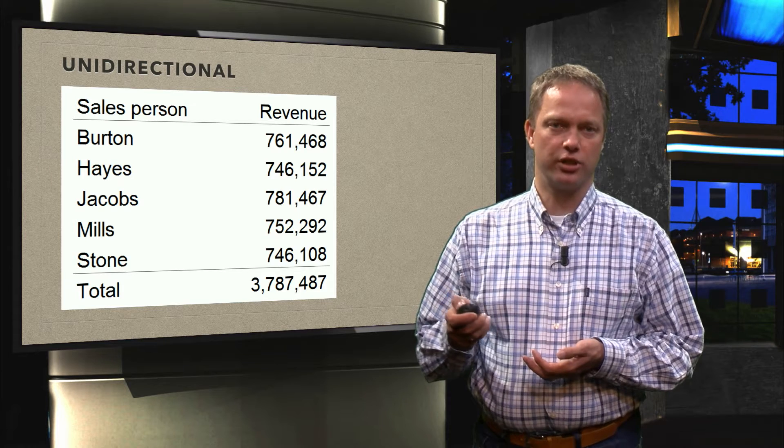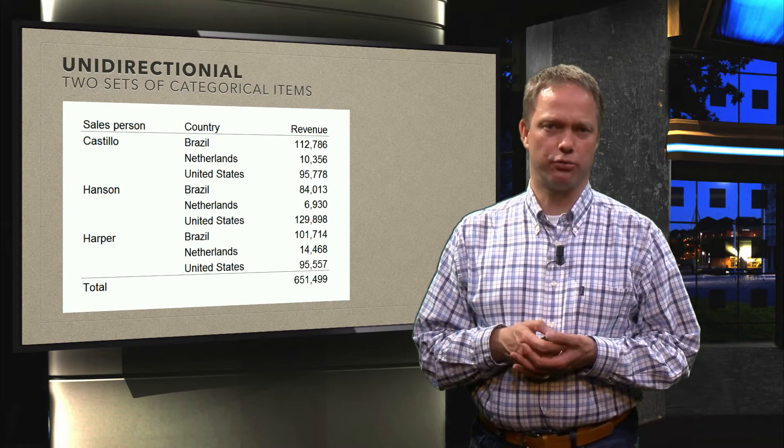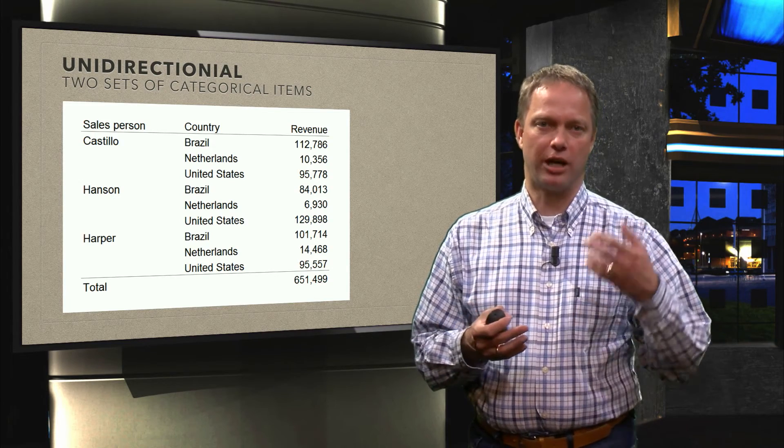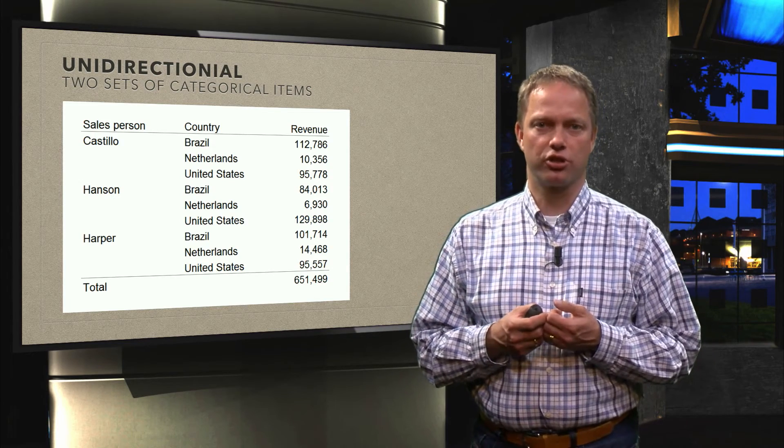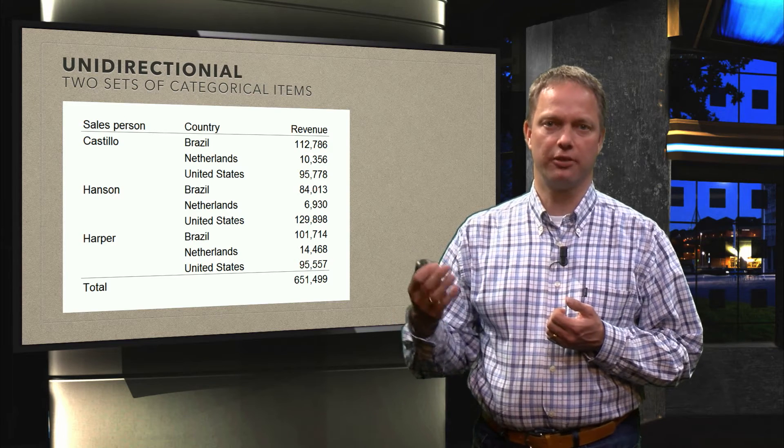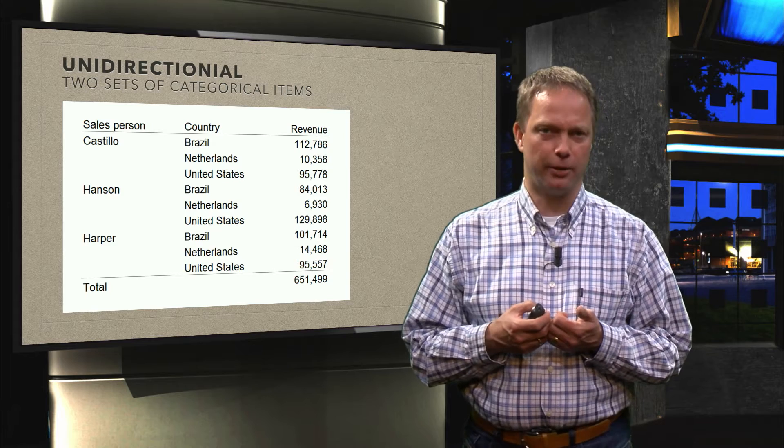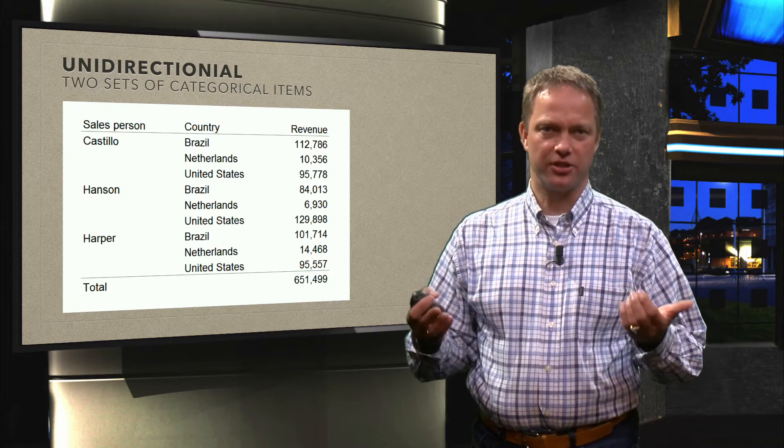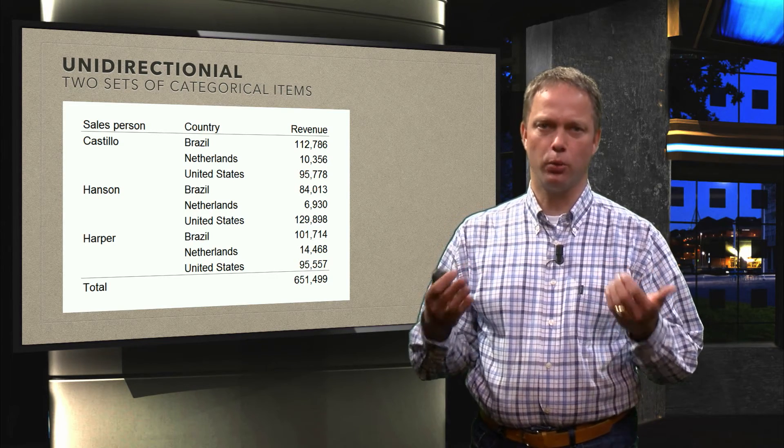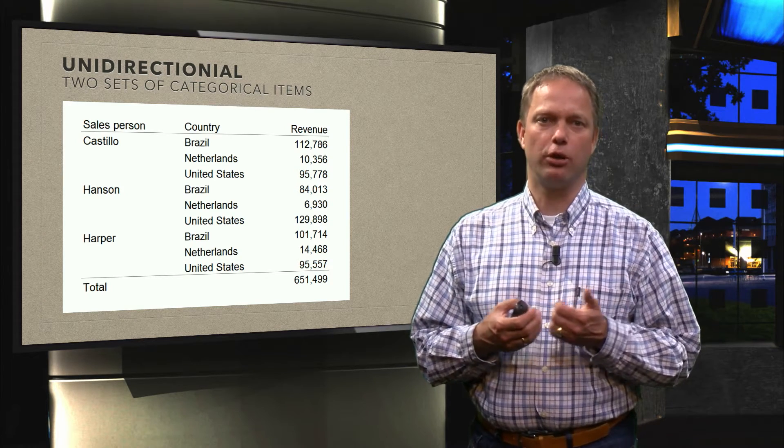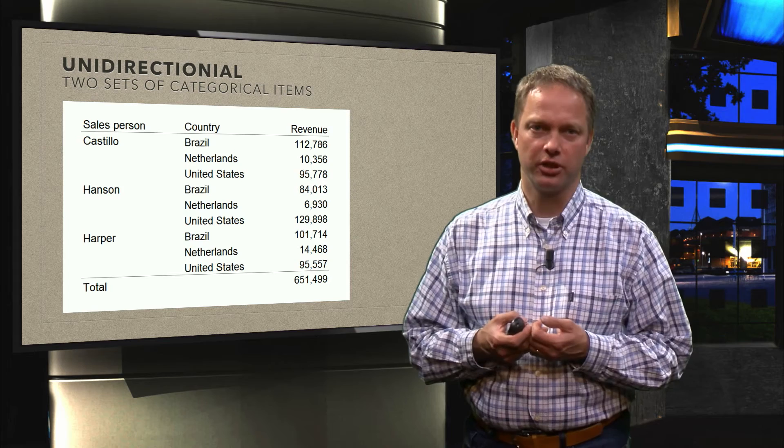So next to salesperson we have also country. And then we can organize the different categories in some kind of hierarchy. So now we see the salesperson and within the salesperson we see the different countries and we see the revenue he or she created there. So that is still a unidirectional table, it is still one dimension, it is all organized in a row. But now we have some kind of hierarchy of the different categories.